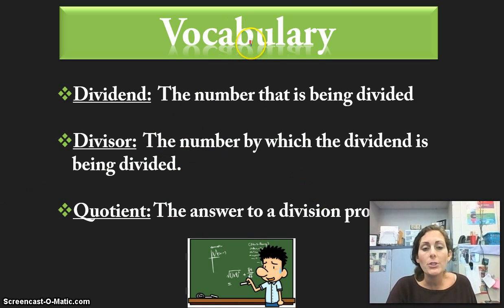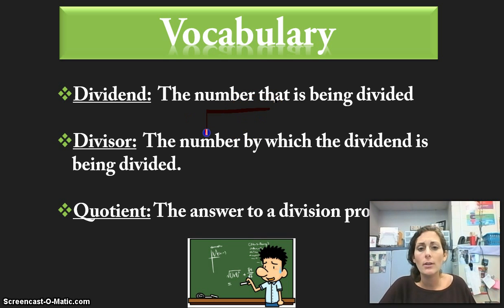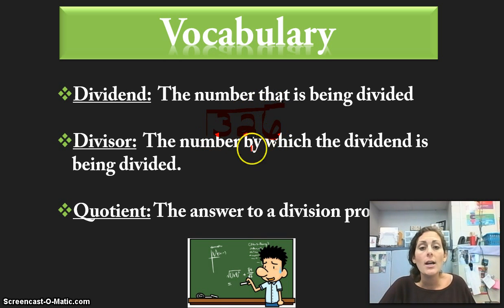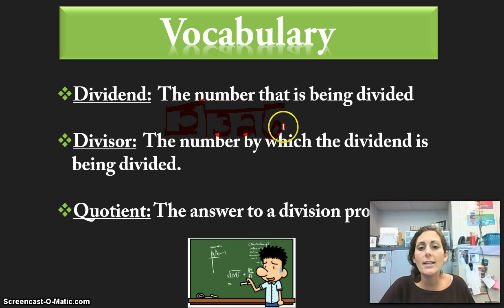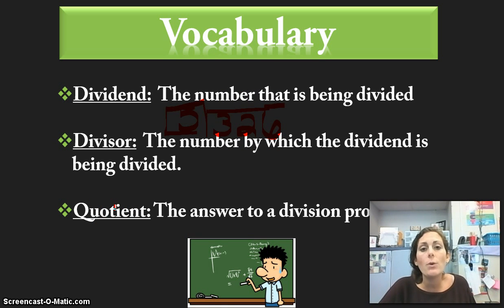Please write 'vocabulary' in your math journal. Your first vocabulary word is dividend — dividend is the number that is being divided. For example, 326 is the number being divided, so that is called your dividend. The divisor is the number by which the dividend is being divided — the number on the outside is the divisor. And the quotient is the answer to a division problem. Go ahead and push pause and write down these vocabulary words.